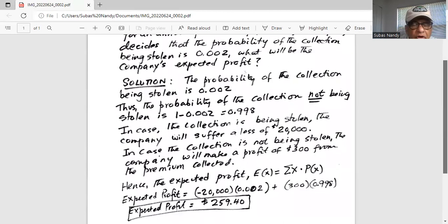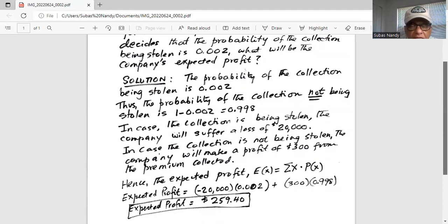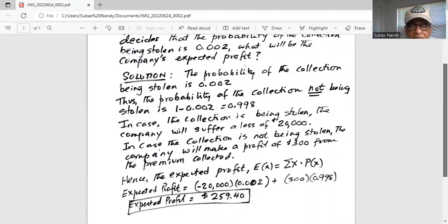So if we do 0.002 times minus 20,000 plus 300 times 0.998, the expected profit for the company is $259.40.